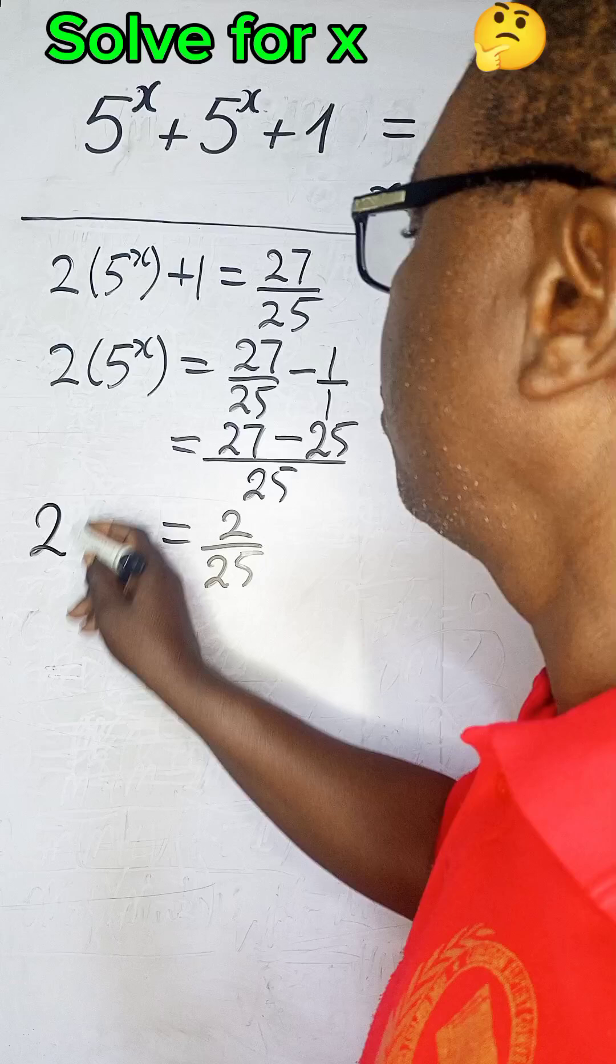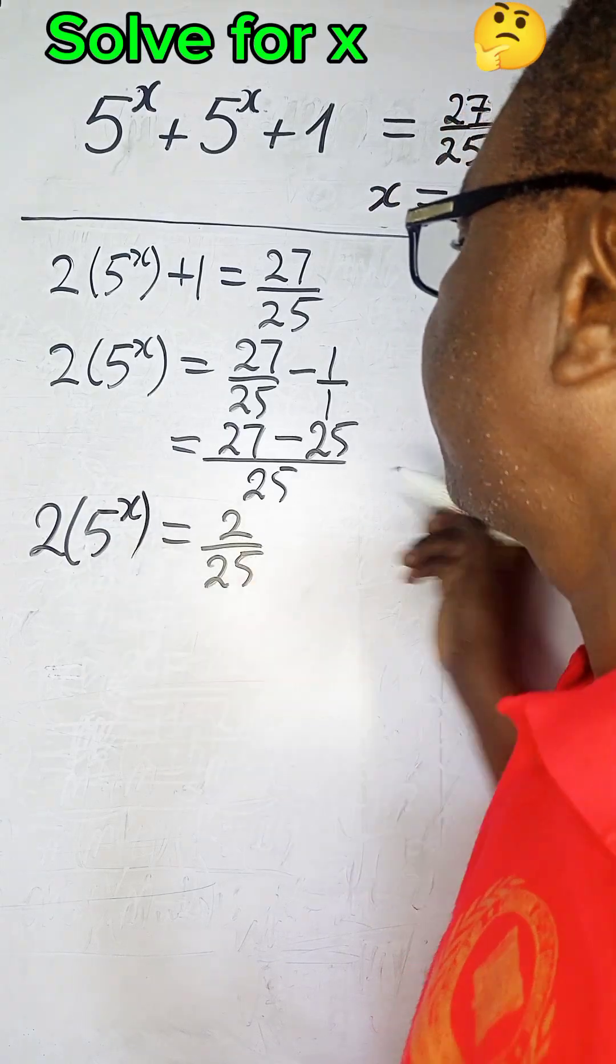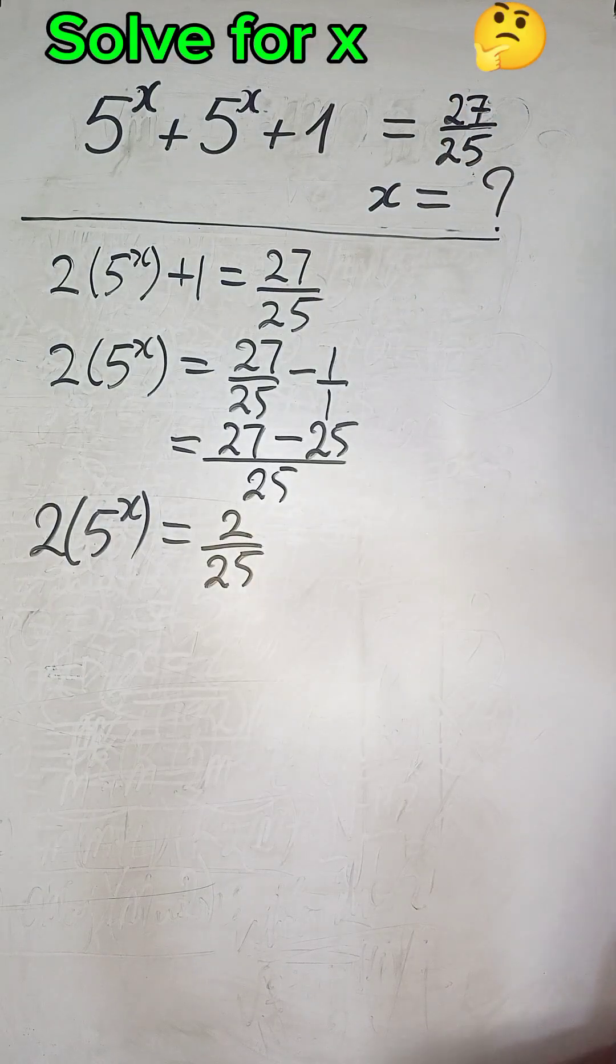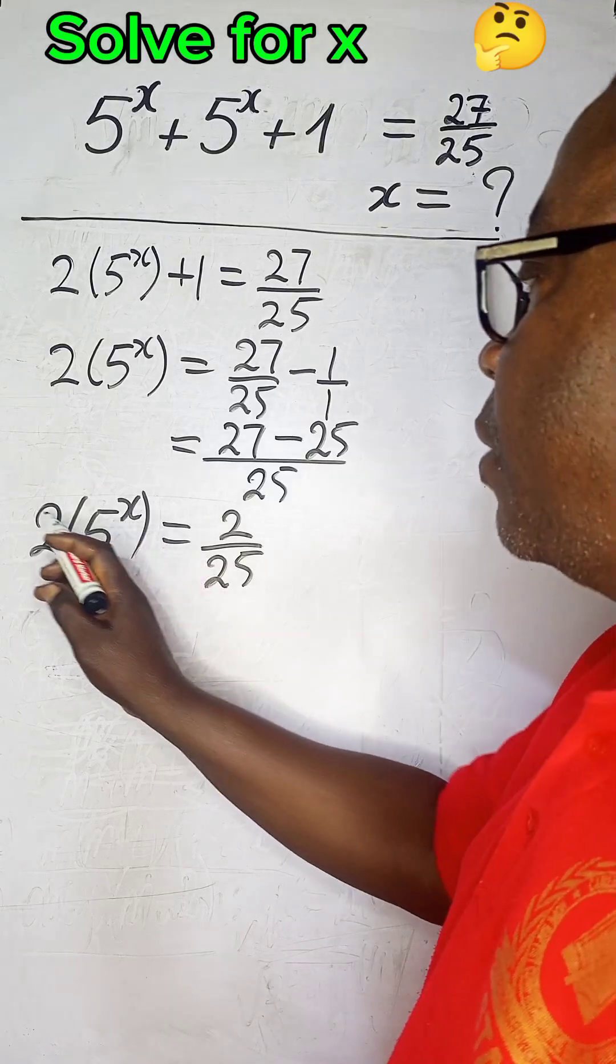So, we are saying 2(5^x) = 2/25. Remember, we want to solve for x. Let's remove these 2. The only acceptable mathematical operation is to divide here by 2.